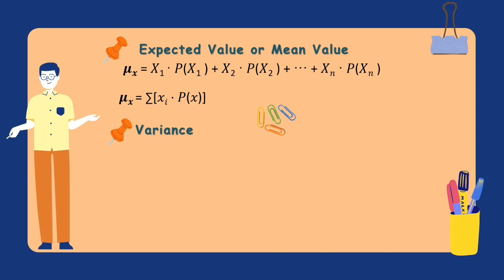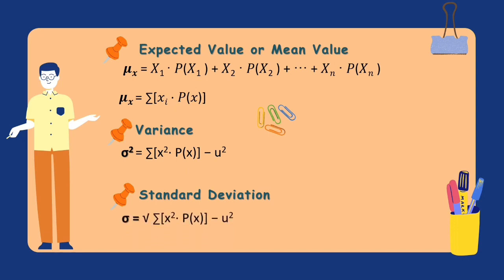To find the variance, remember the following formula. We will multiply the square of the value of the random variable by its corresponding probability, then get the summation, then subtract the square of the mean from the results obtained. In this formula, x squared is the square value of a discrete random variable and P(x) is the probability of an outcome of a discrete random variable. Furthermore, the standard deviation of a discrete random variable is the square root of its variance, where x is the value of the random variable and P(x) is its probability.